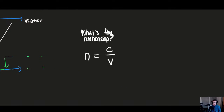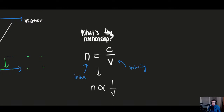The index of refraction N equals C over V, where C is the speed of light and V is the velocity of light within that specific medium. Since C is constant, N is inversely proportional to V: as the index of refraction goes up, the velocity goes down. Index of refraction is kind of like a sludge factor — juice would have a low index of refraction so velocity is still pretty high; cement would have a really big index of refraction so velocity is much slower. As index of refraction goes up and velocity drops, the amount of bending also increases.